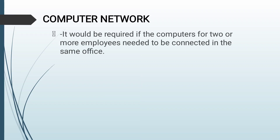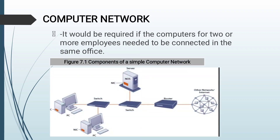A computer network would be required if computers for two or more employees needed to be connected in the same office. A network is made up of two or more connected computers in its most basic form, including a client computer, a dedicated server computer, network interfaces, a connection medium, network operating system software, and either a hub or a switch. A simple computer network consists of computers, a network operating system residing on a dedicated server, cable wiring connecting the devices, switches, and a router.